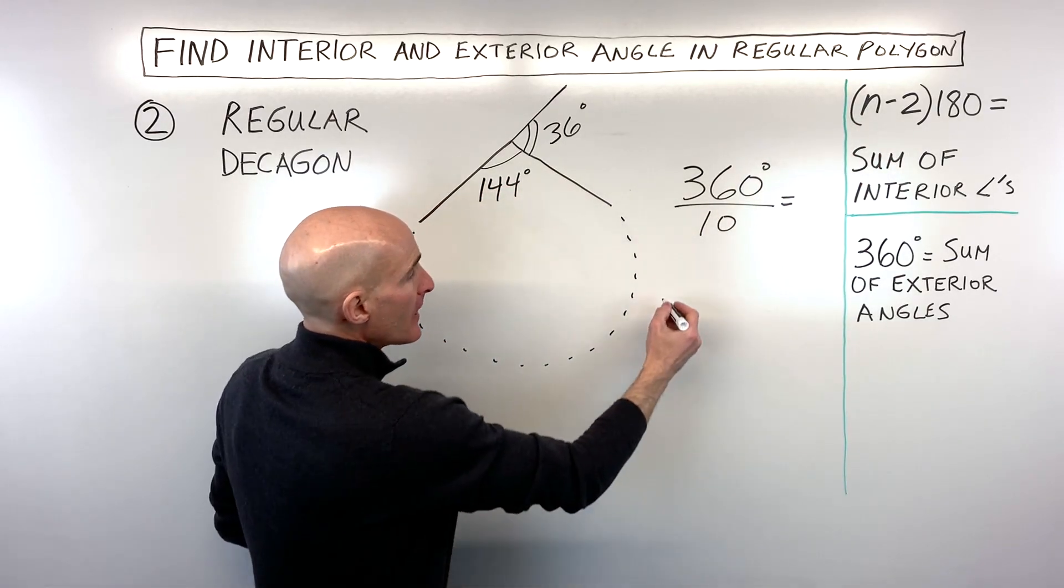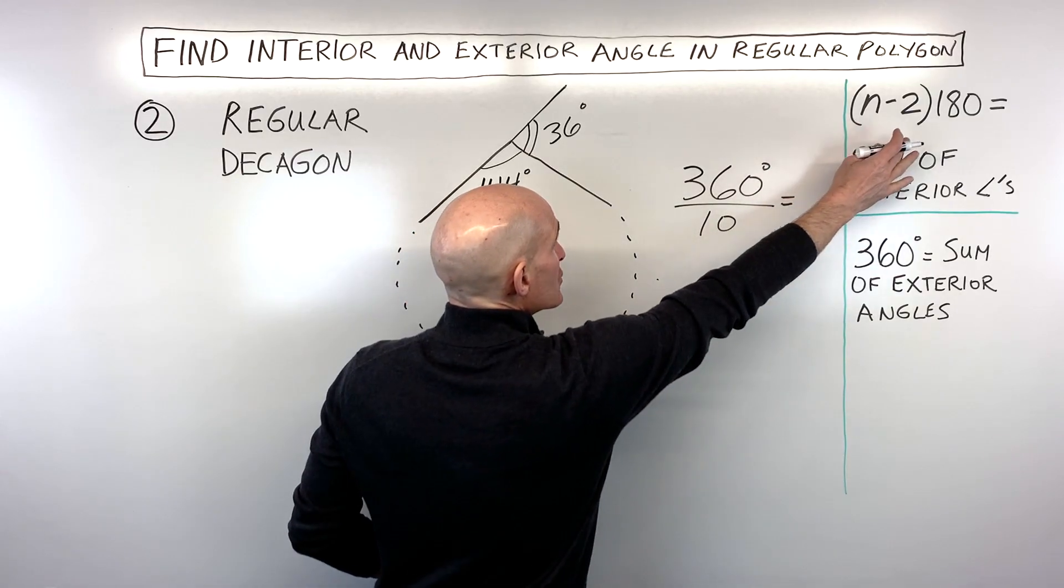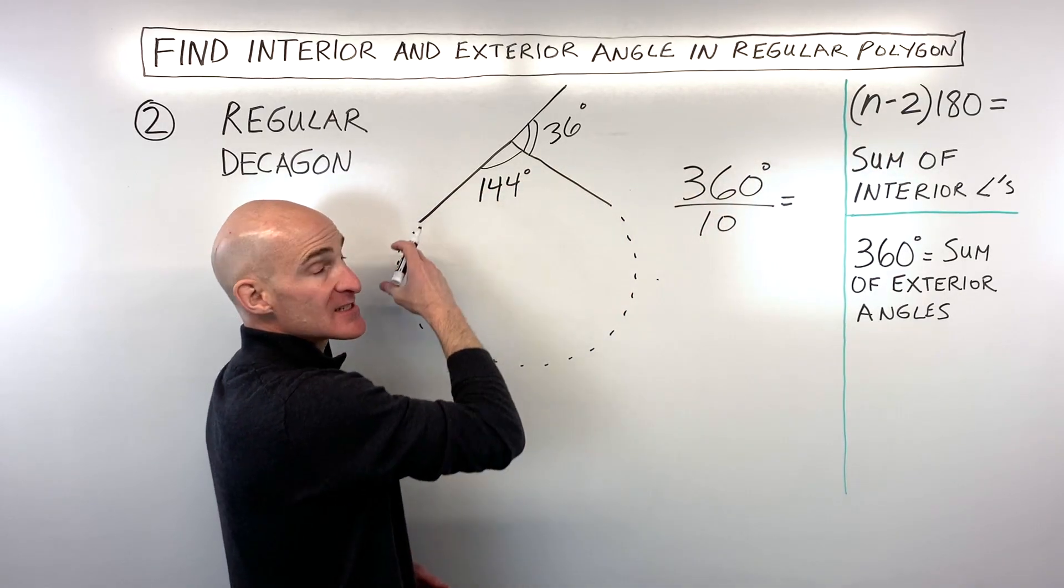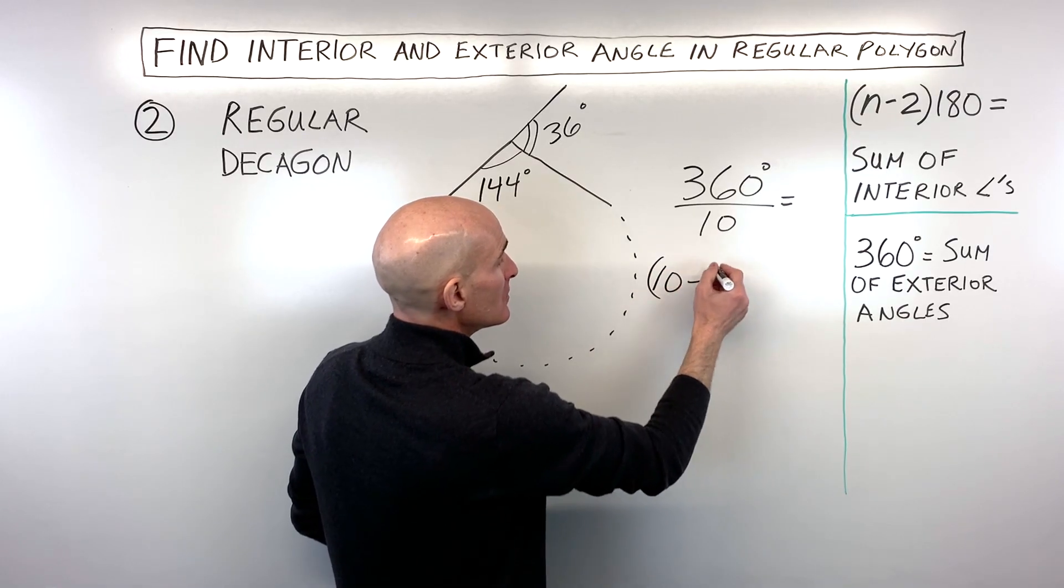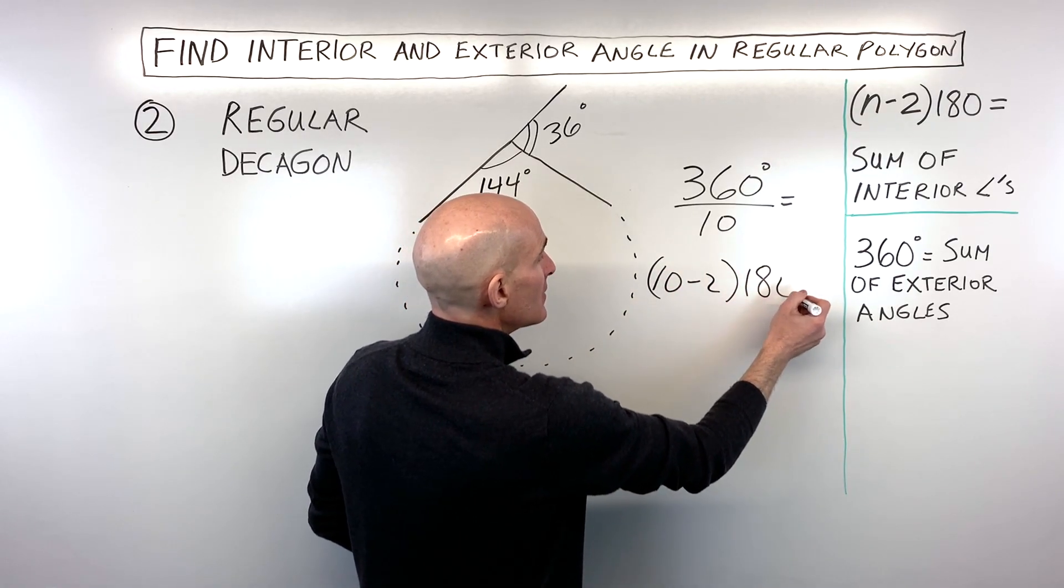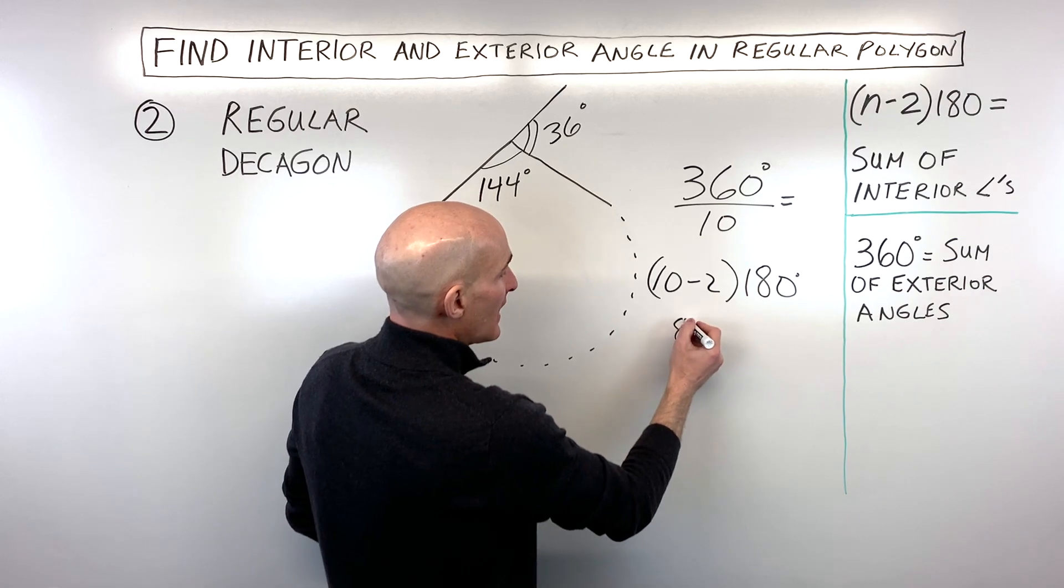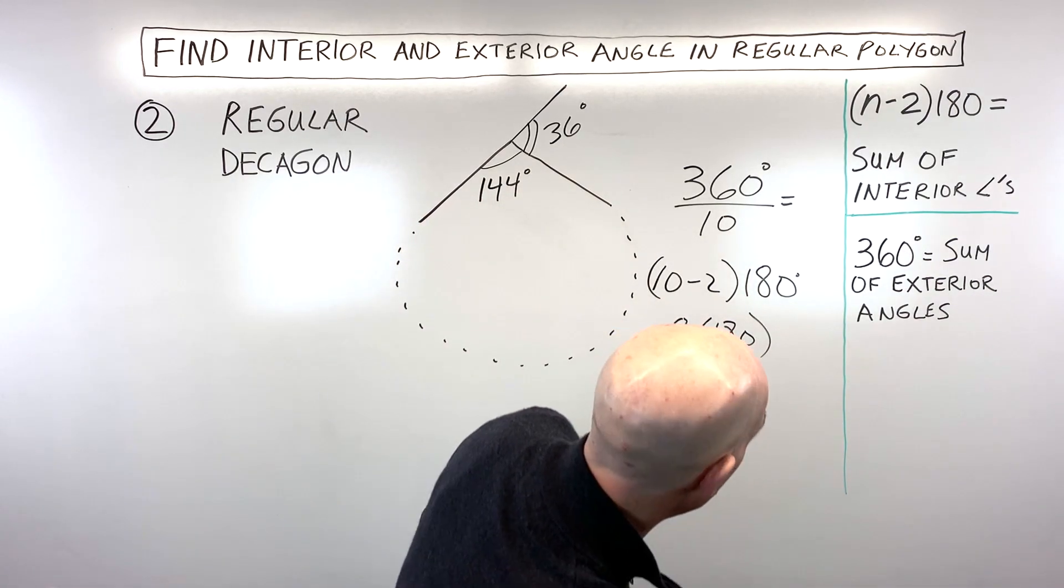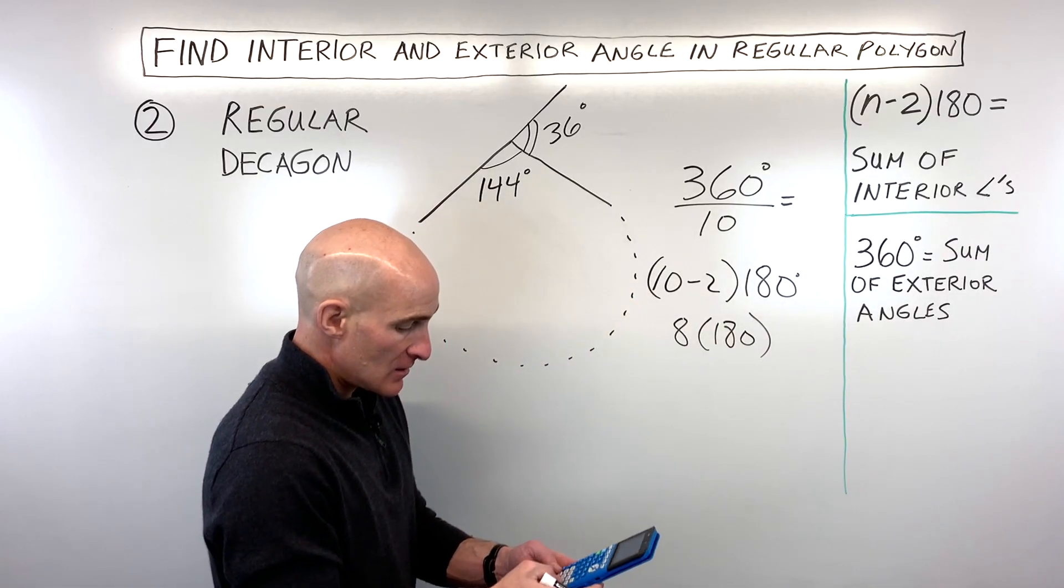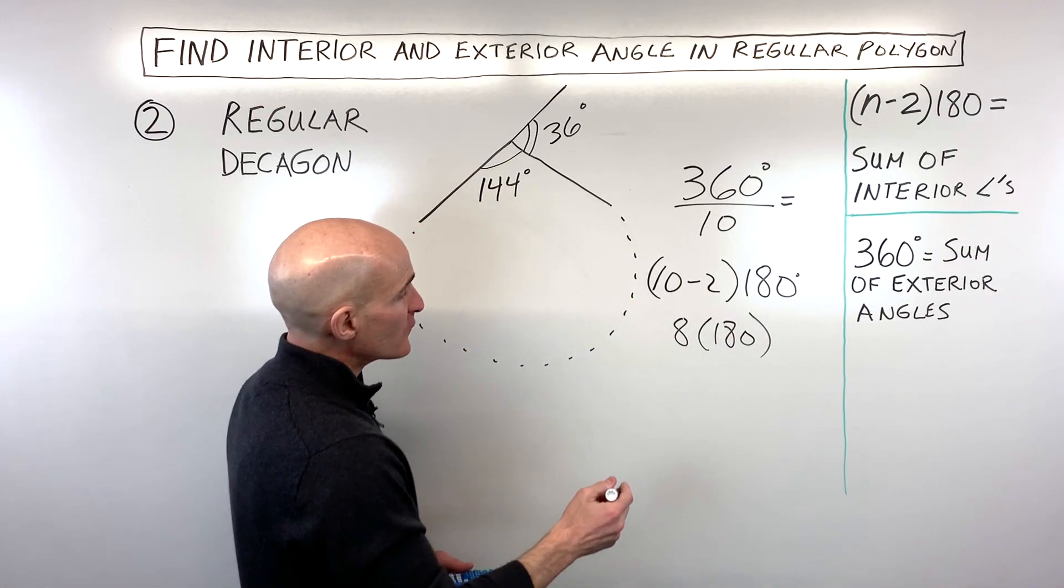The other option is to go to our sum of our interior angles formula, and let's do n minus 2 times 180. So in this case there's 10 angles, so we're going to say 10 minus 2 times 180, which gives us 8 times 180, which, let's go to the calculator, I believe that's 1440.